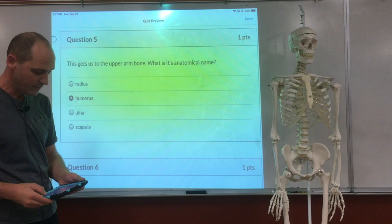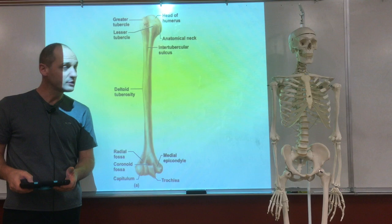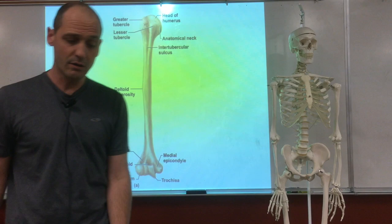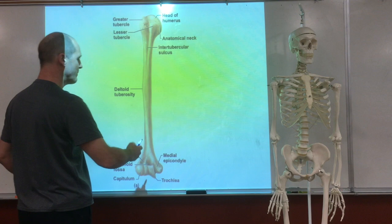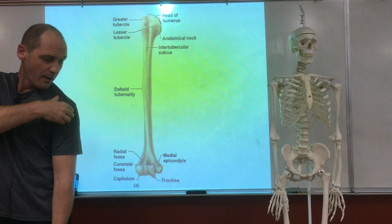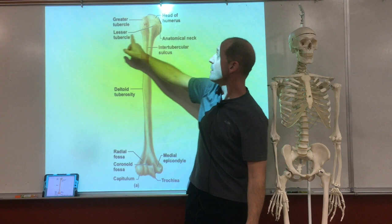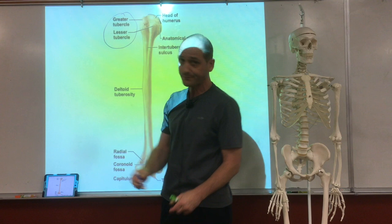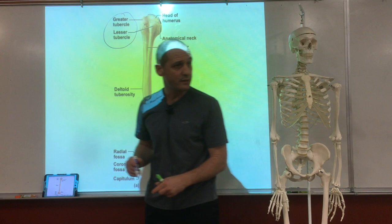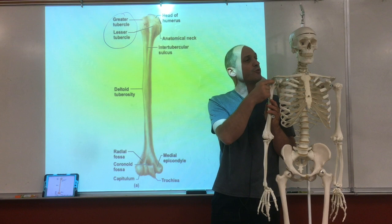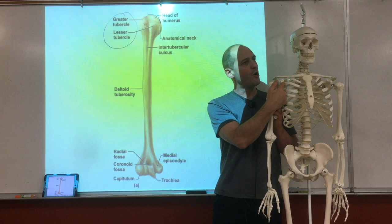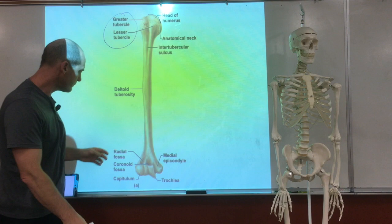Now we get to the upper arm. What's that called? The humerus. It's just called the humerus — I don't know why it's called the humerus actually. When you look at the humerus, that's the upper arm bone. The round that you feel is not the head of the humerus but one of these bigger bumps called the tubercle. The greater tubercle is right out here, and then we have a lesser tubercle right next to it. One is bigger, one is smaller. The greater is on the outside, the lesser is more to the front.